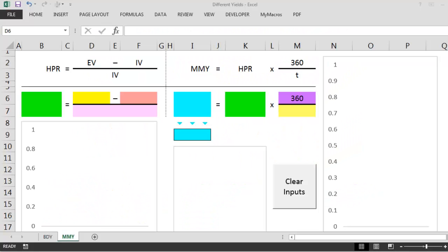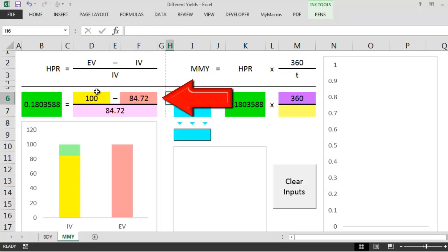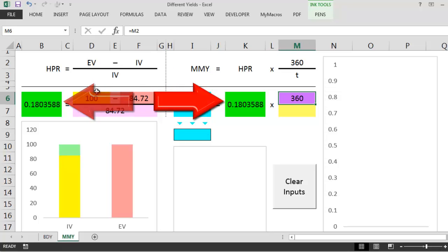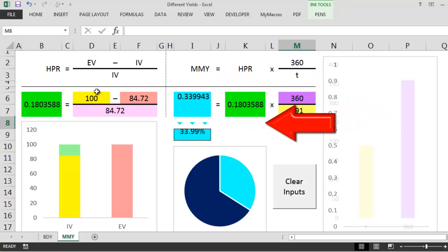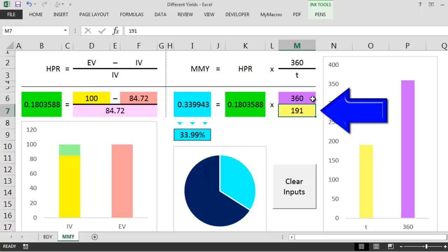Getting back to the example, let's run it through a cunning Excel spreadsheet to make sure we got all the numbers right. So it's 100 for the end value and 84.72 for the initial value. This gives us a holding period return of approximately 18.04%. Now we input the time to maturity of 191 days, and this gives us the expected money market yield of 33.99%.